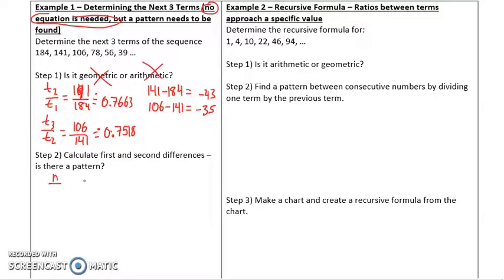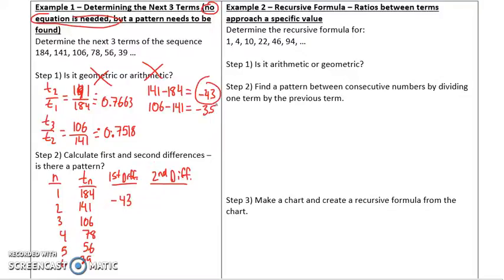So, if we make a chart of the term number and the term value, we say that for the first term number, we have 184. For the second term number, we have 141. For the third term number, we have 106, etc. And we calculate the first and second differences. I'm trying to see if there's a pattern between those first and second differences that will allow me to continue on and determine the next three terms. The first difference of 141 minus 184 is negative 43. That's what I did up above here.